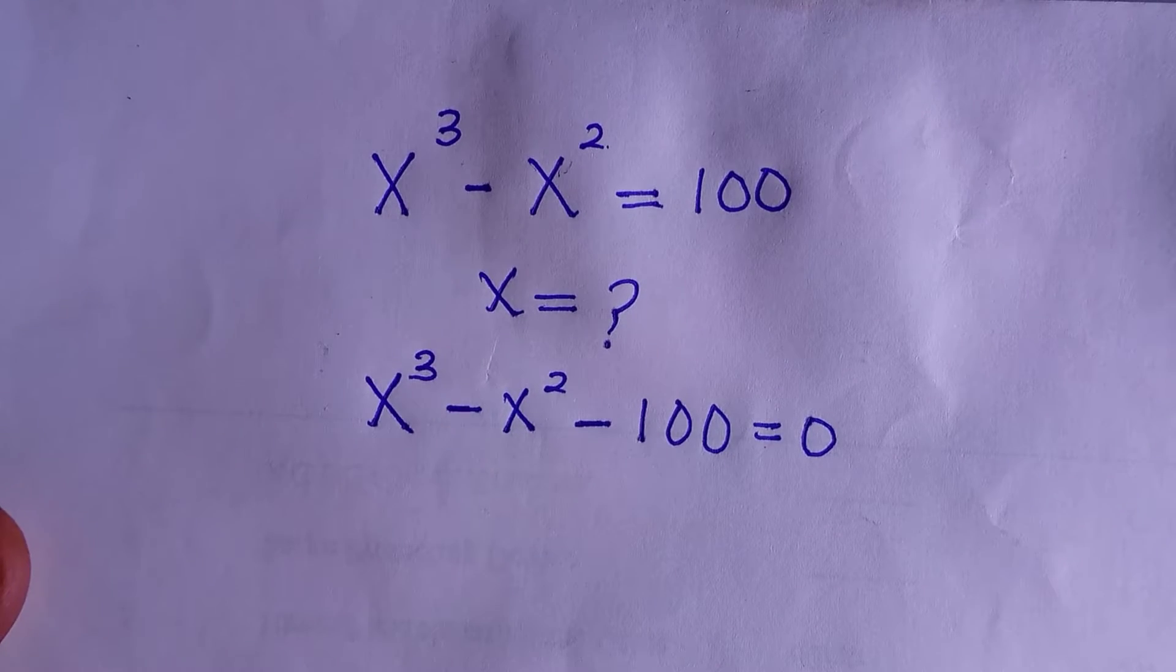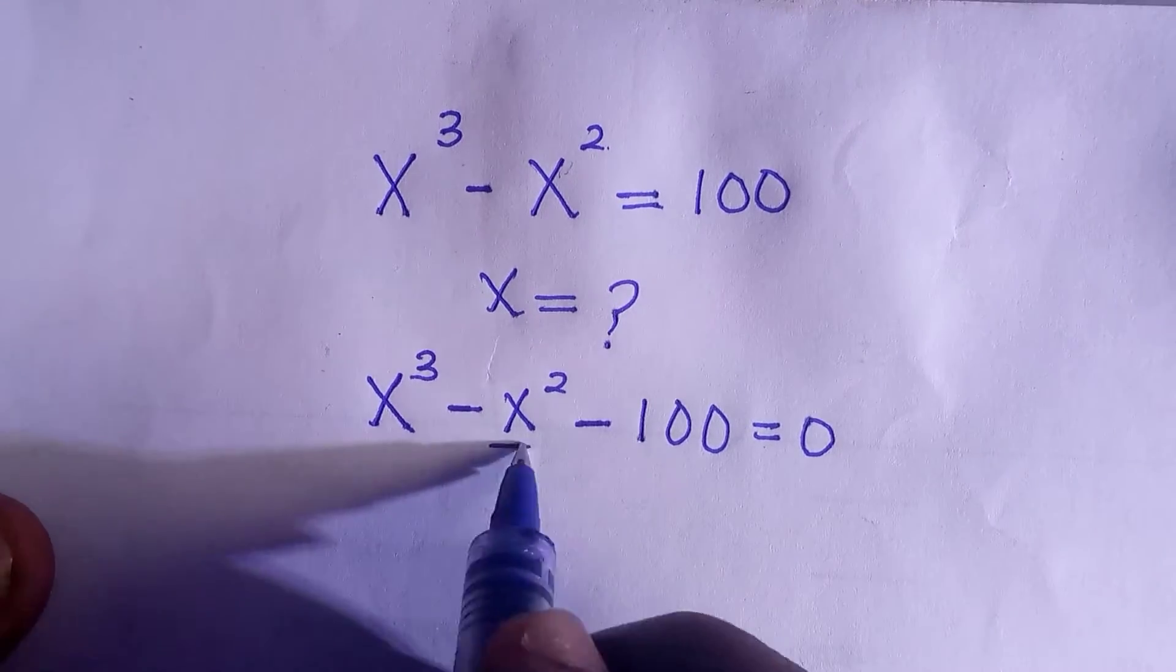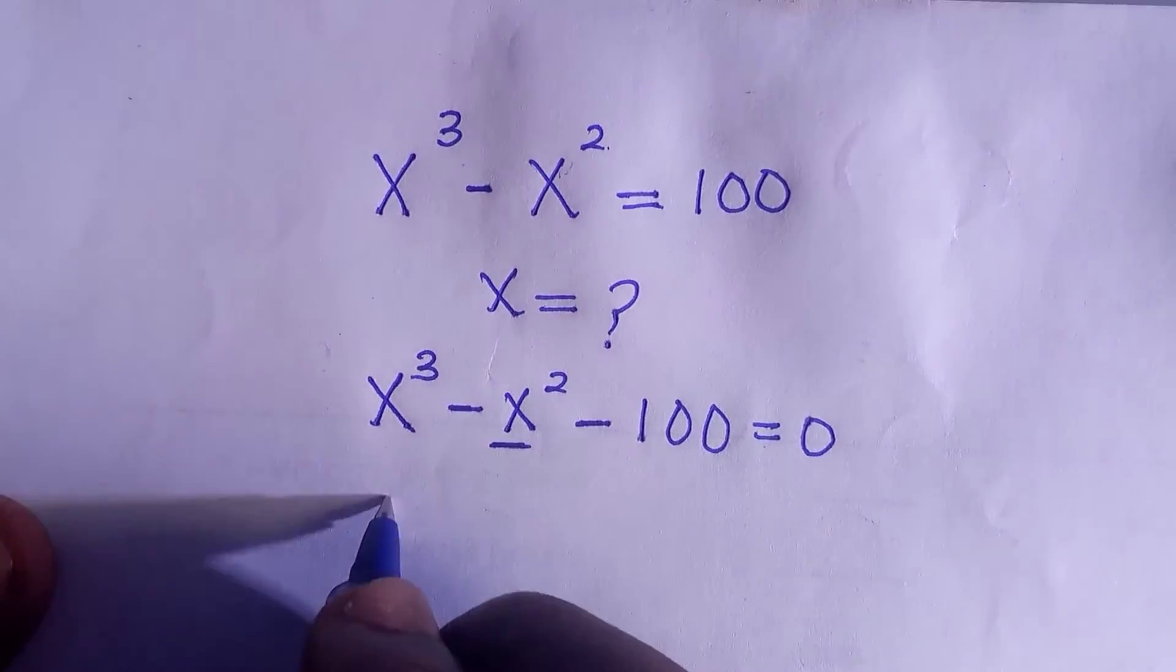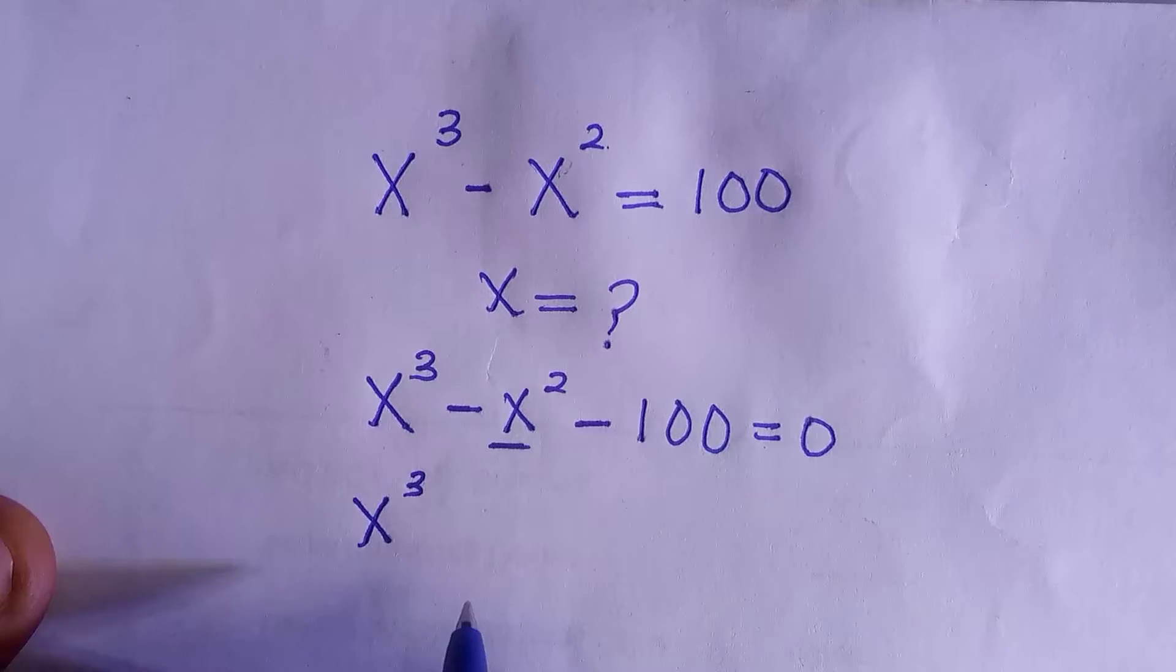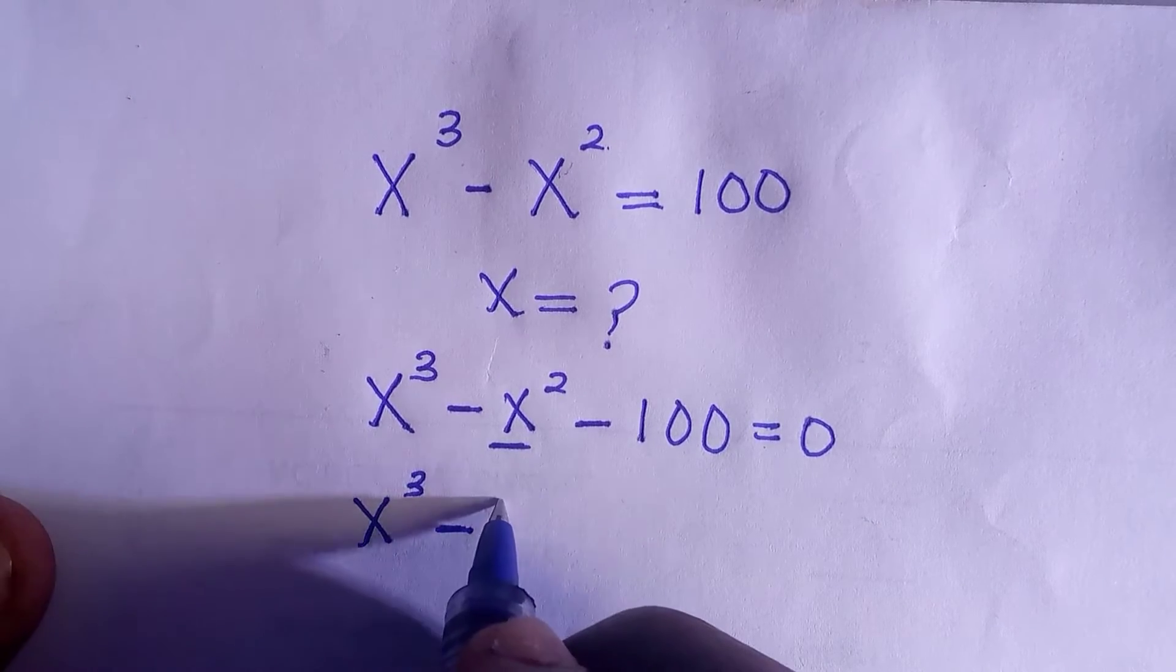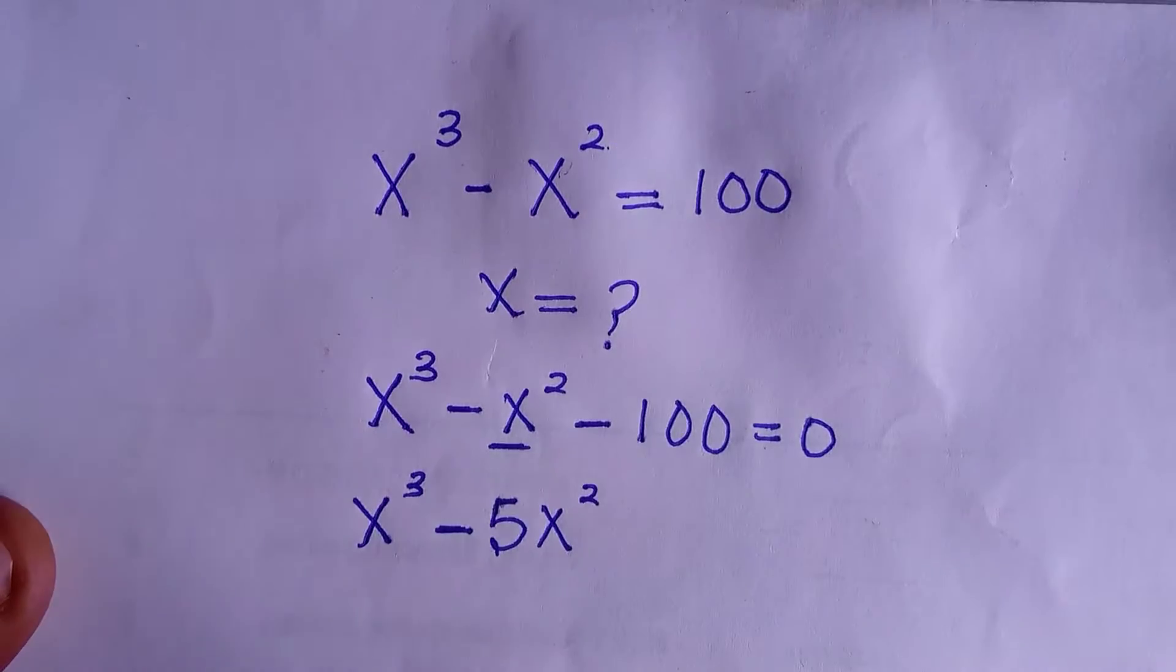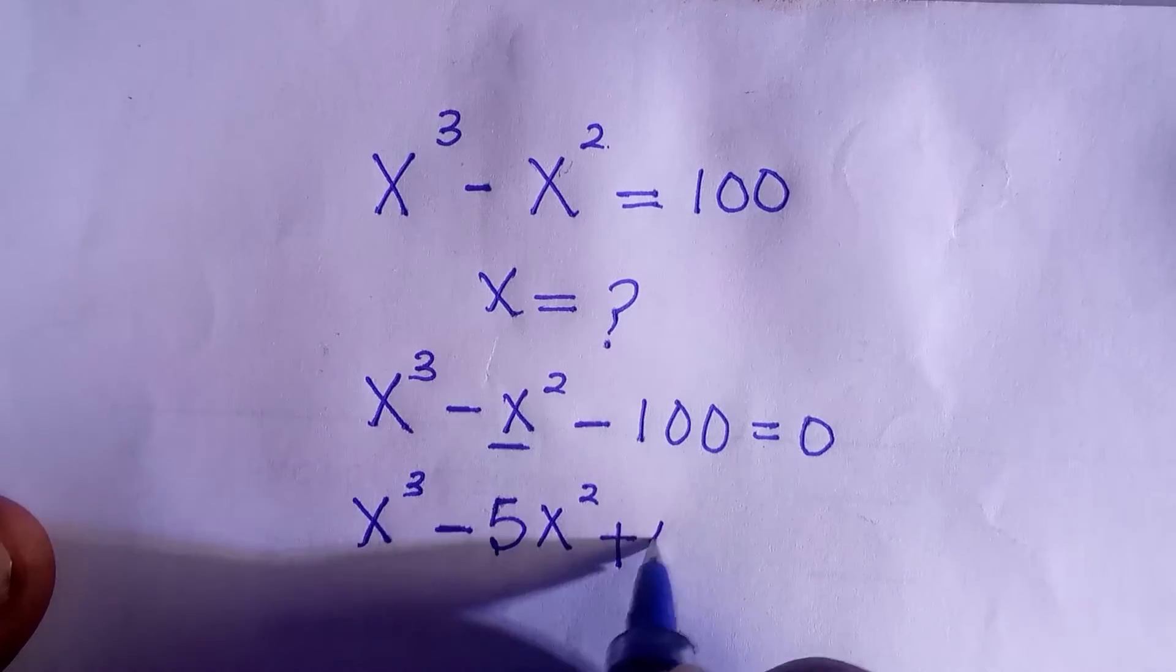But here we are going to do a quick manipulation for this x raised to power 2. We'll rewrite it as x raised to power 2 minus 5x raised to power 2 and add 4x raised to power of 2.